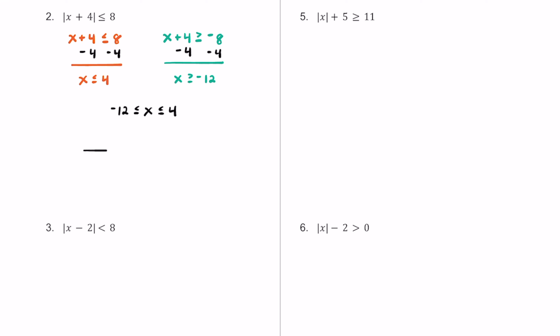Sketching the solutions on a number line, we have zero somewhere in the middle, positive 4 to the right, and negative 12 a bit further to the left. We put closed or filled-in circles on negative 12 and on positive 4. x can be any value between negative 12 and 4, including those two values, to make this inequality true.